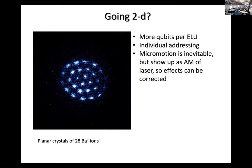A question about quantum chemistry: given tens of qubits, which problems or how large a molecule can one tackle today? The IonQ device was able to simulate the water molecule with very good precision using 11 qubits. How it scales depends on how many degrees of freedom need to be simulated for a given molecule, and I'm not a molecular physicist so I can't give a complete answer.